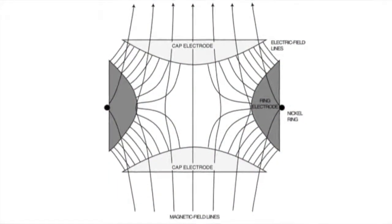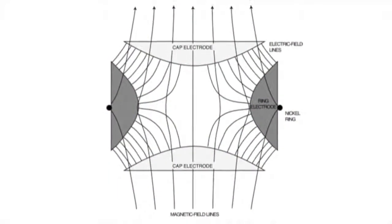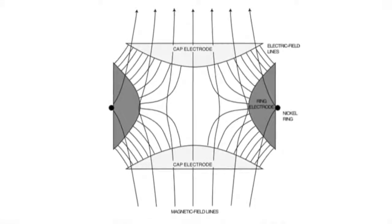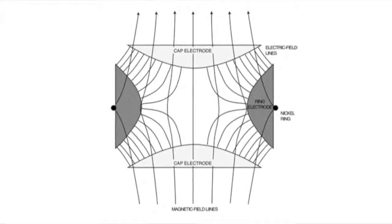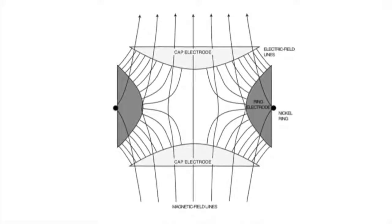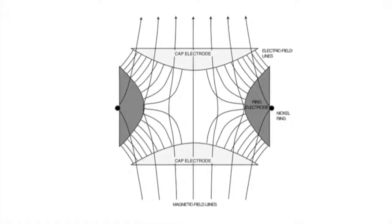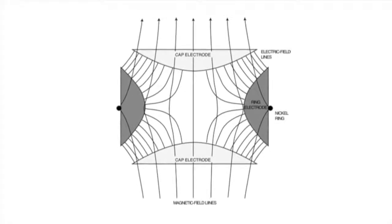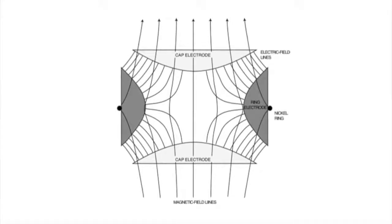We will calculate the motion of electrons in a Penning trap like the one shown in this small sketch. For the moment we will neglect the influence of the slight inhomogeneity of the magnetic field caused by the nickel ring and the electric field of the cap electrodes.